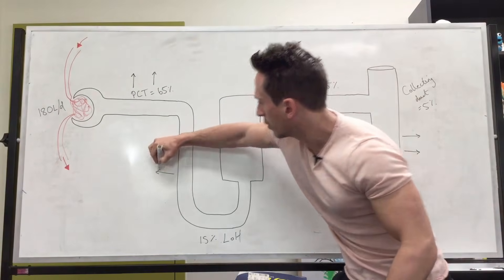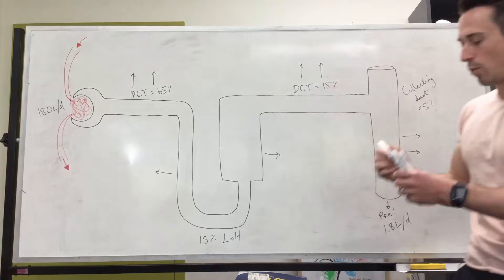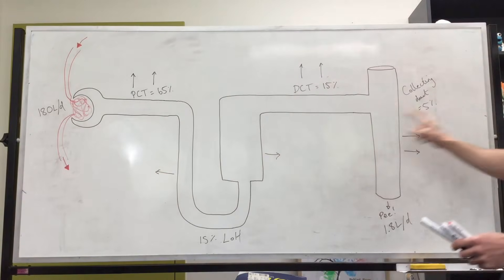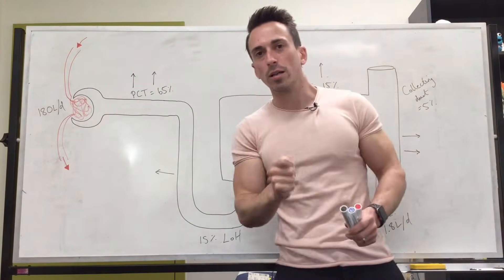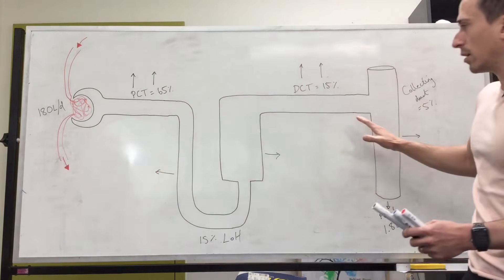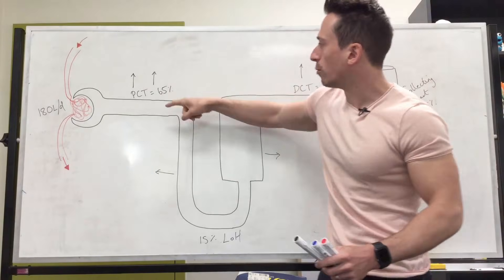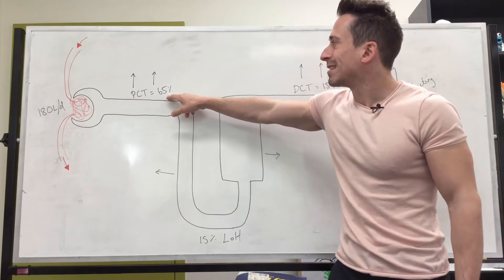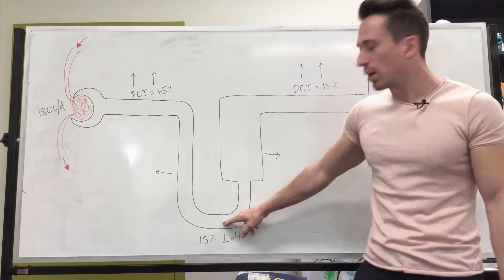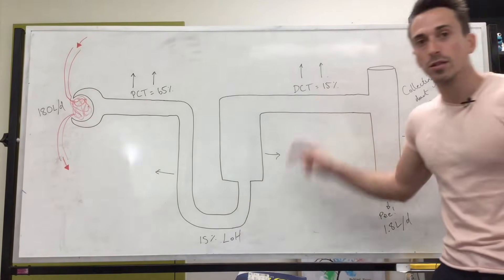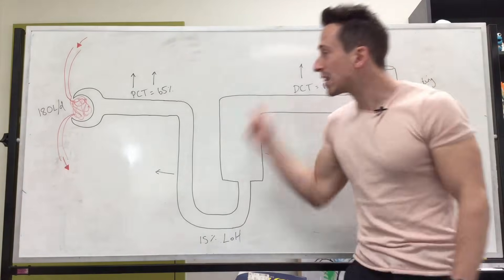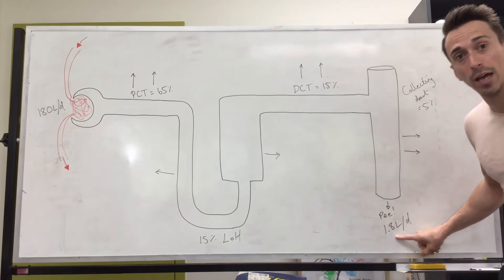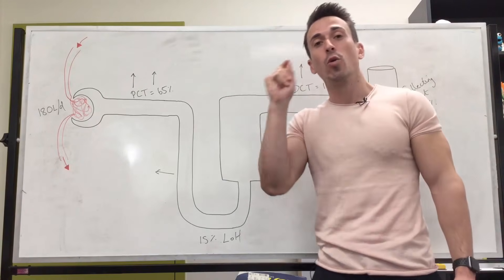It's really important to understand reabsorption in these particular areas, because if we were to alter it by even 10% — say we didn't reabsorb everything we needed — instead of reabsorbing 65% at the PCT we only reabsorbed 62%, and each subsequent segment also fell short, we wouldn't pee out 1.8 liters per day. We'd pee out 18 liters per day. And that's not possible — we would die very quickly.